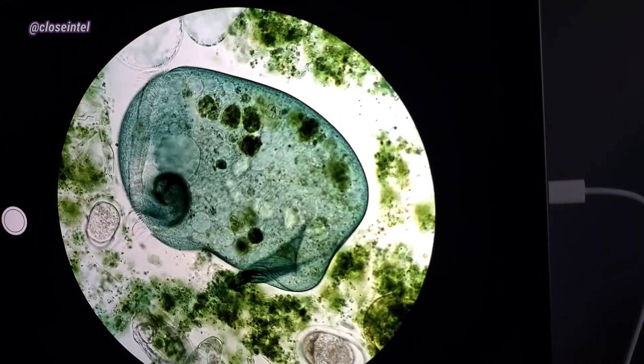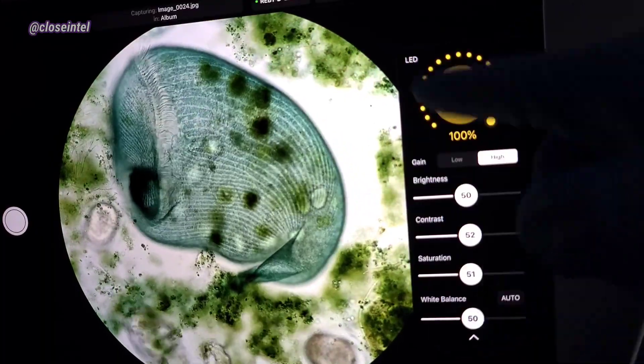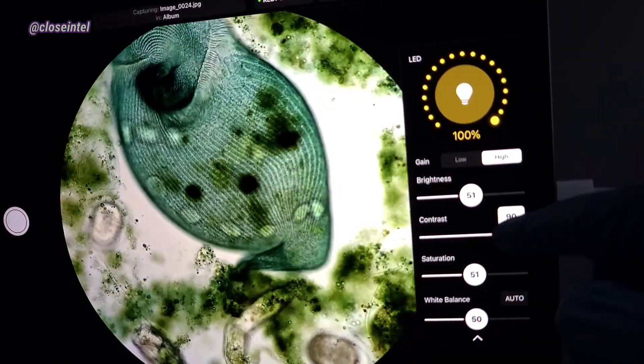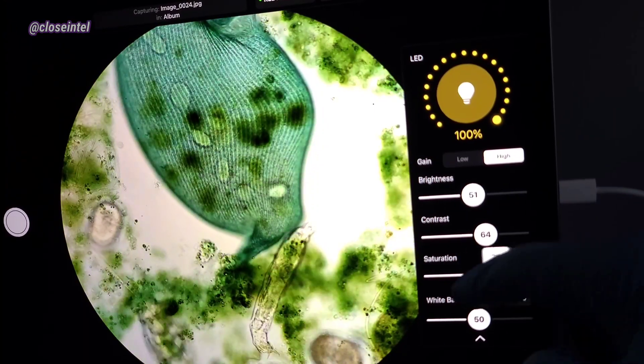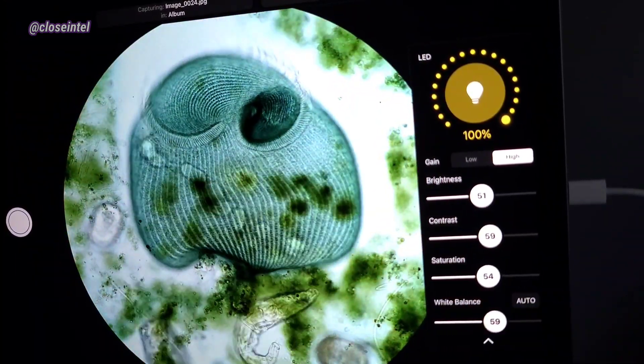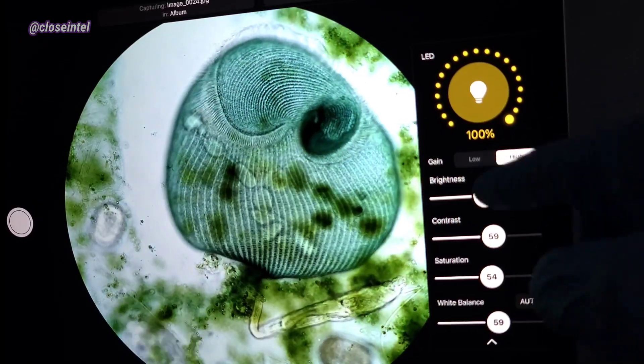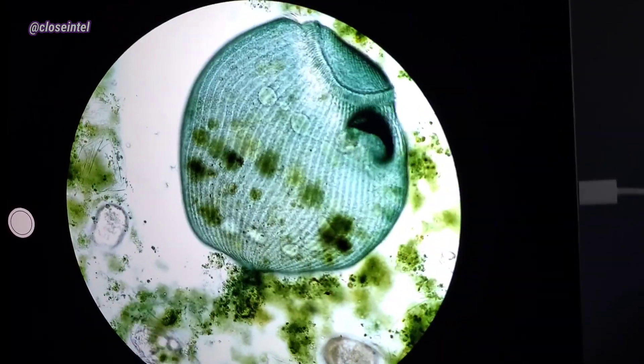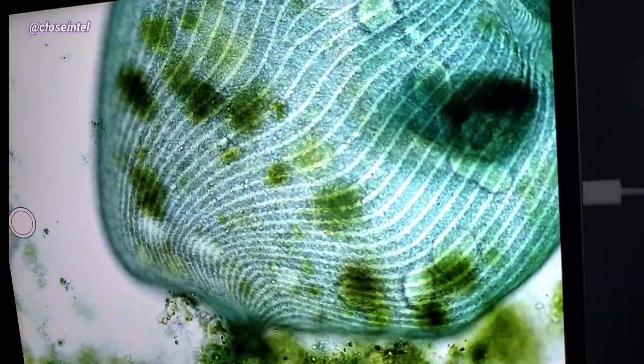It also has some software capabilities that you can use while you're looking at specimens. You can increase or decrease the intensity of the LED, the brightness, contrast, the saturation, and it even has a white balance feature. There's also high gain and low gain along with being able to zoom in or out to see better details.